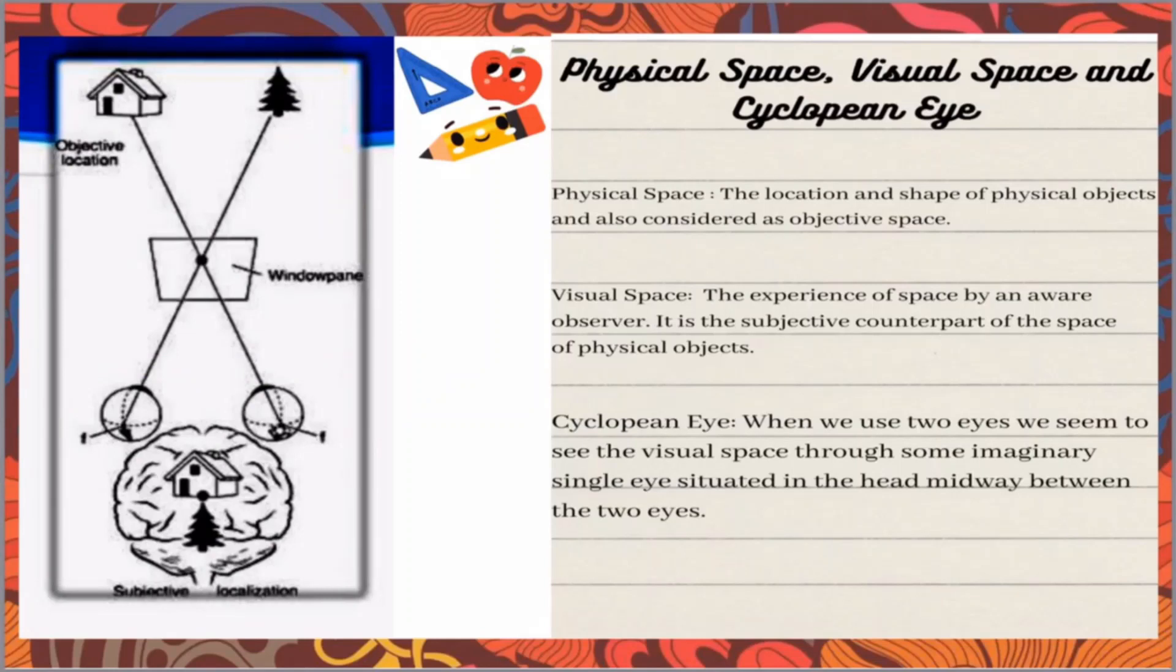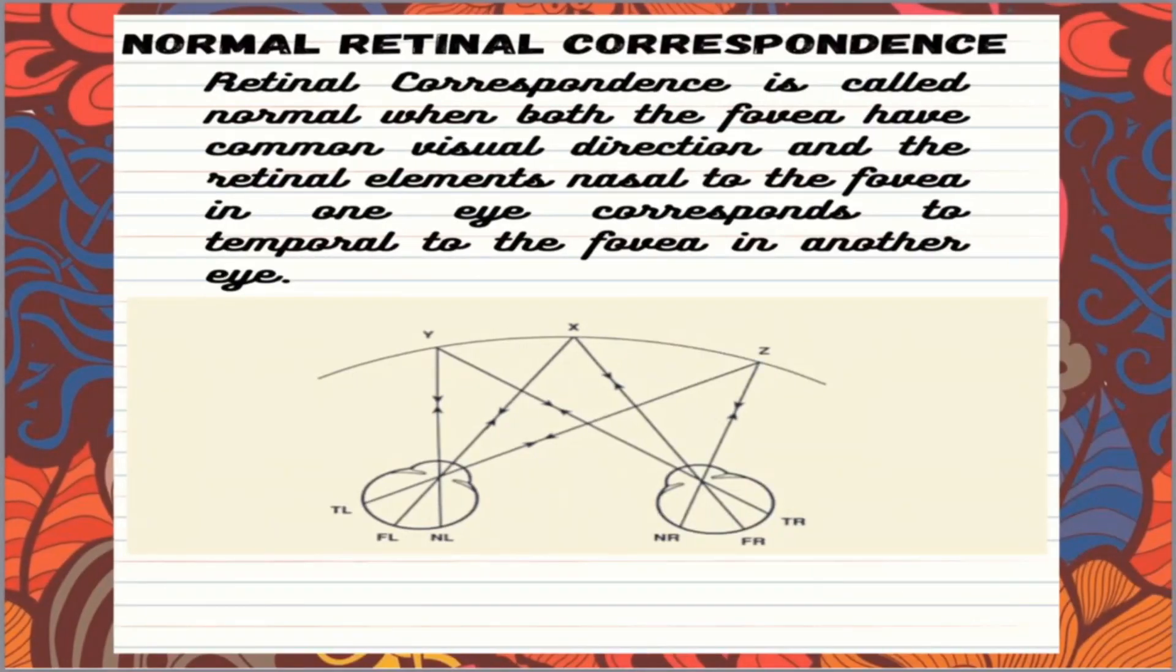So these images which are formed are actually perceived in the visual cortex, so there is no such eye in the middle of the forehead.